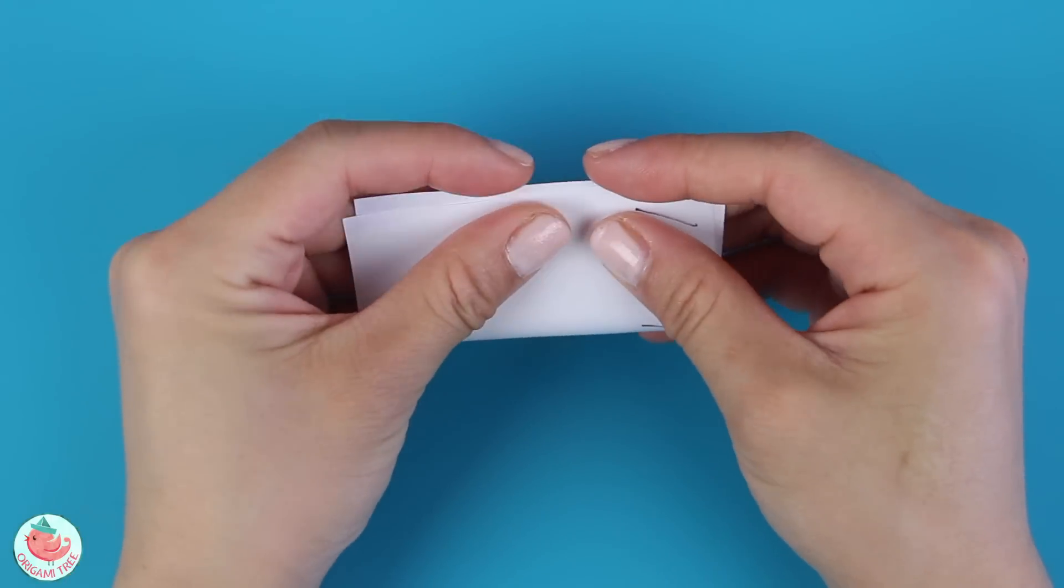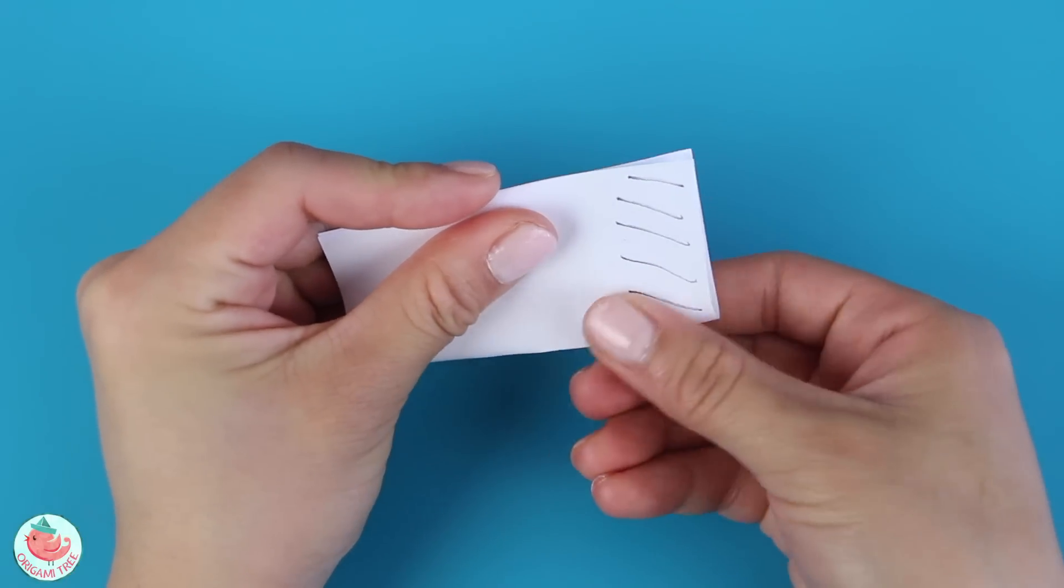And the first thing you want to do is you want to fold it in half with the adhesive side facing the outside.